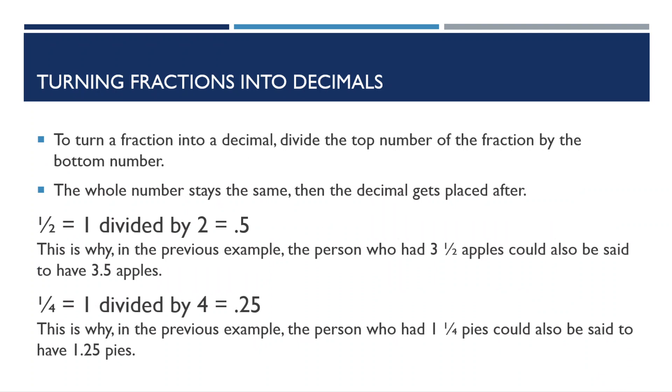Now let's take a look at how to turn a fraction into a decimal. To do this, we divide the top number of the fraction by the bottom number. If you have a mixed number, which is a number with a whole number and a fraction, the whole number stays the same, then the decimal gets placed after.